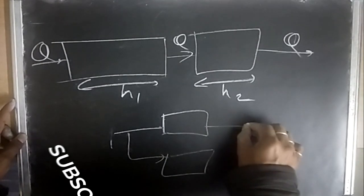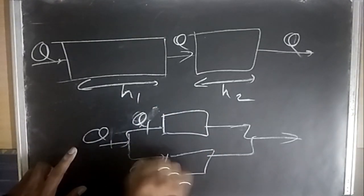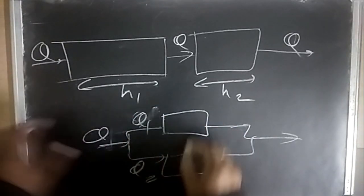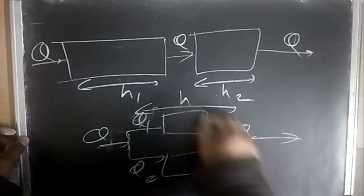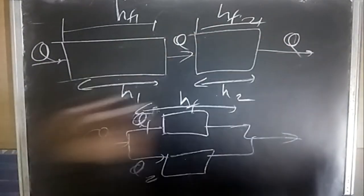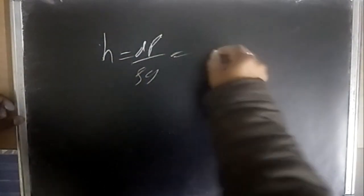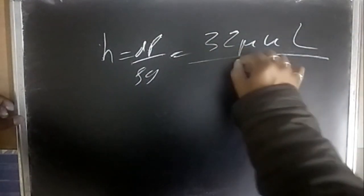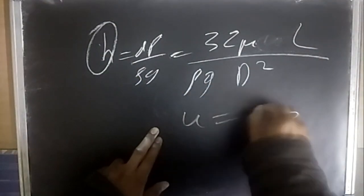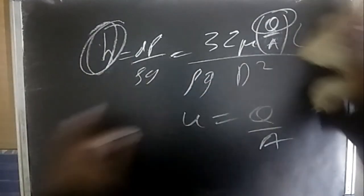For pipes in parallel: the head loss is the same across each branch (h_f1 = h_f2), but flow rates divide (Q1 + Q2 = Q_total). This is useful when applying Hagen-Poiseuille: h_f = 32μUL/(ρg·d²), where U = Q/A. Use the head equality condition to find the flow distribution.